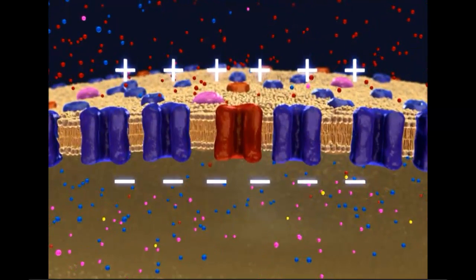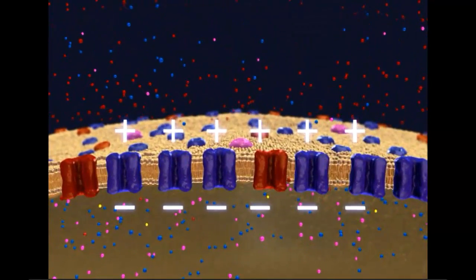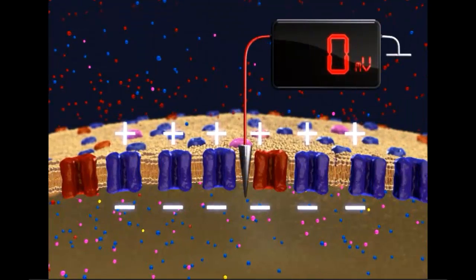This partitioning of charge creates a voltage difference across the membrane, known as the resting membrane potential, which can be measured using a voltmeter.